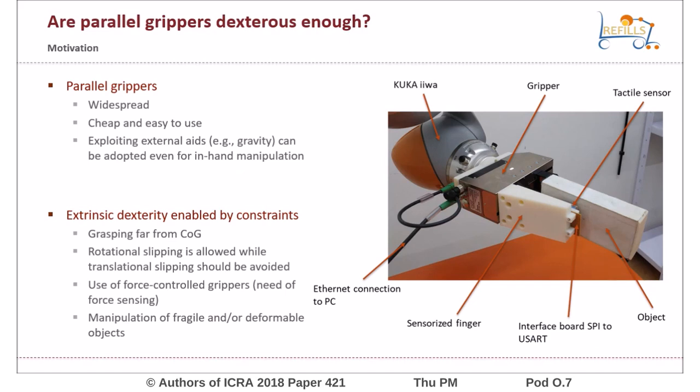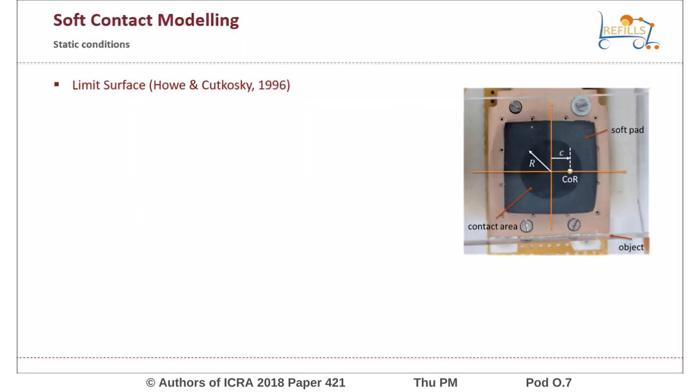Jaw grippers can not only grasp an object firmly, but rotational and or translational sliding motion can be required to the object with the aim to change its pose, depending on the task to execute. This is the so-called extrinsic dexterity concept. Our approach is model-based.